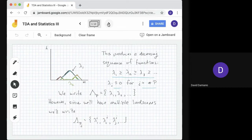From the definition, we get a decreasing sequence of functions: λ1 ≥ λ2 ≥ λ3, and λj is identically zero for j greater than the number of persistence points. We consider this as a collection and write λp = (λ1, λ2, ...). With multiple persistence diagrams and landscapes, we'll write λpj, and to distinguish between landscape functions, we'll use a superscript j.